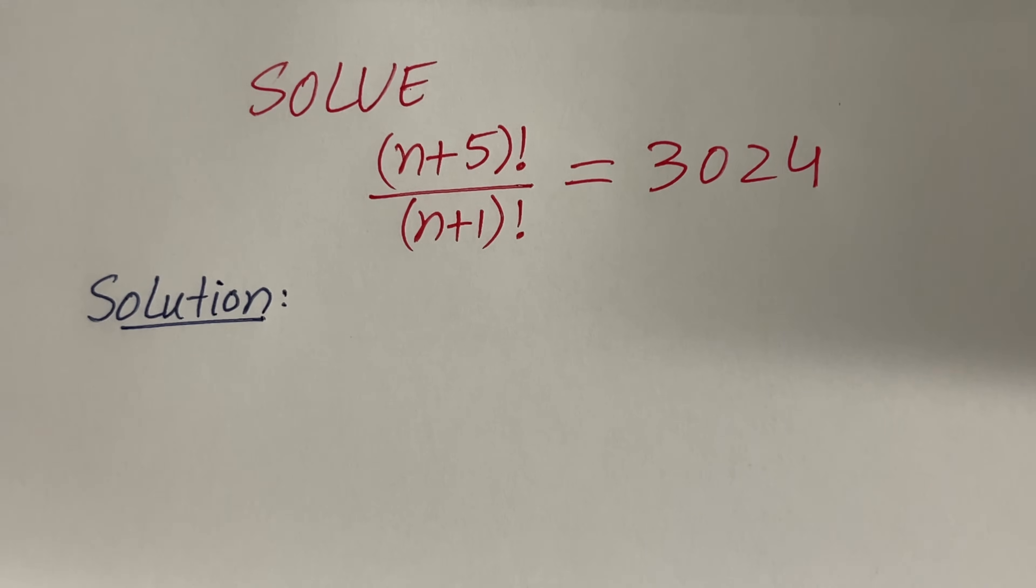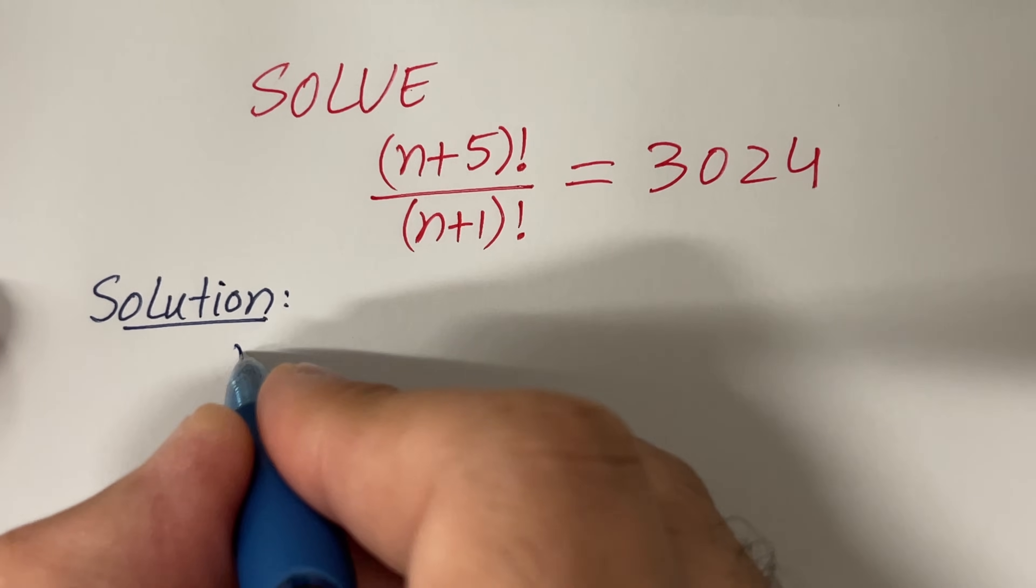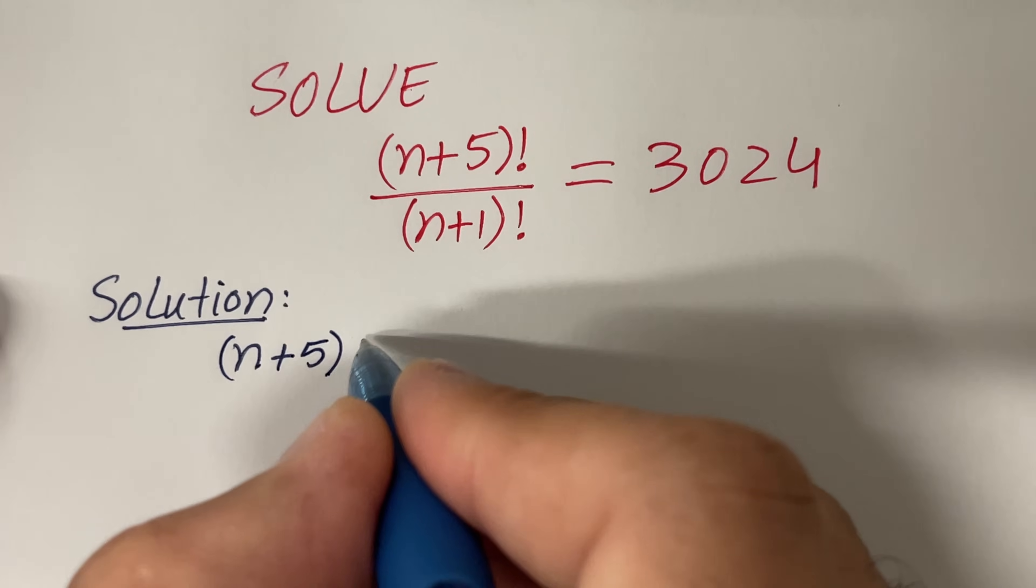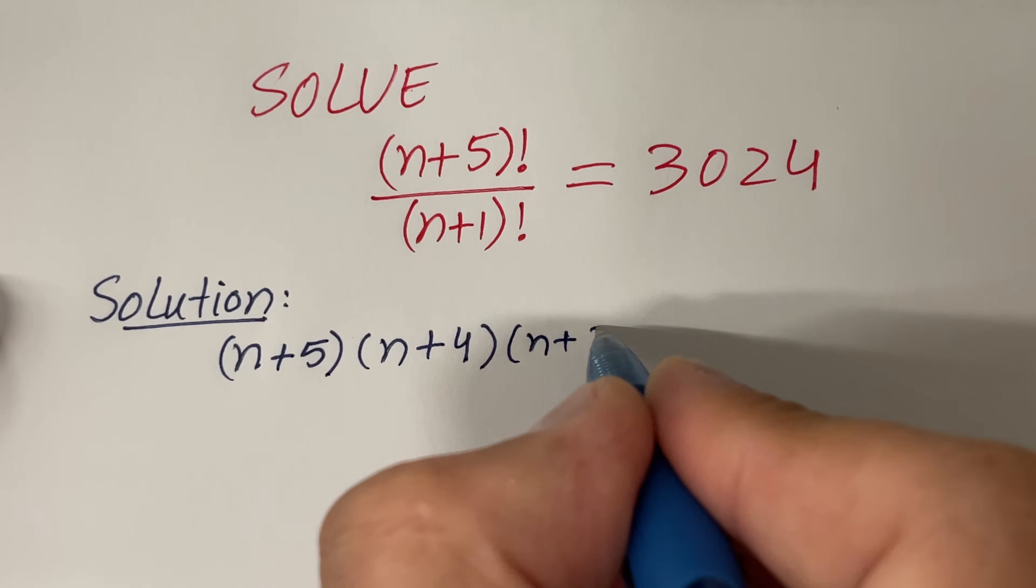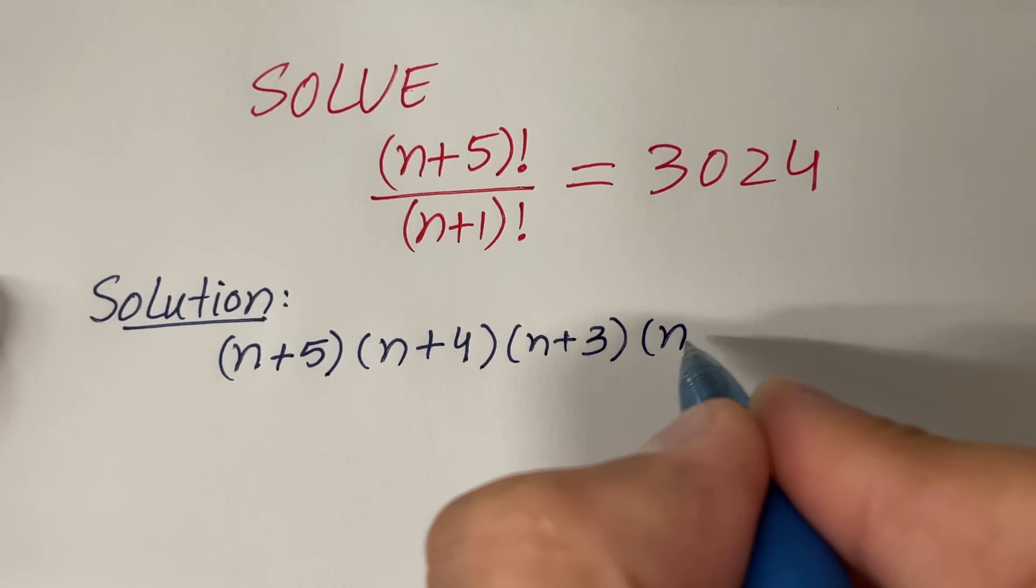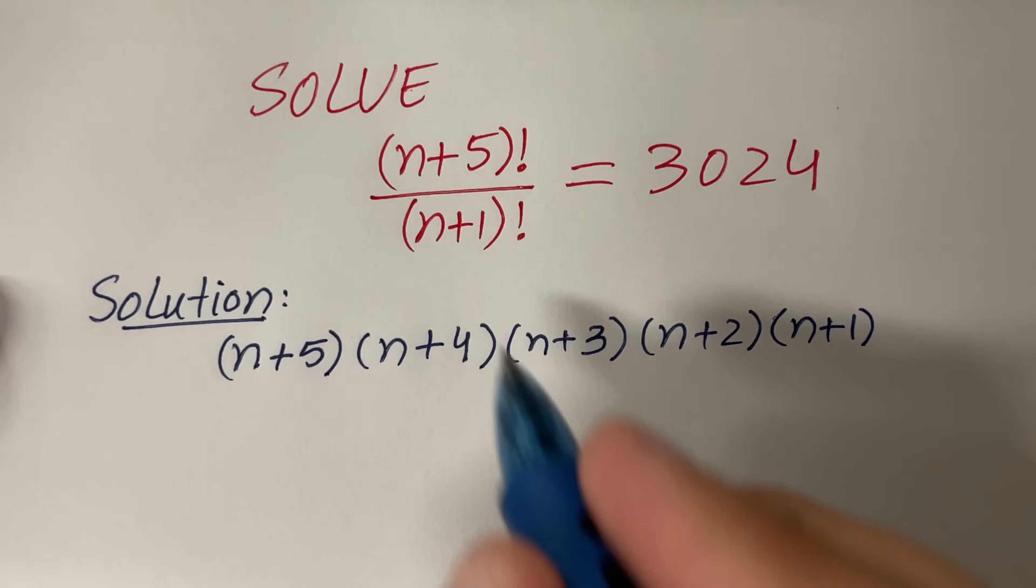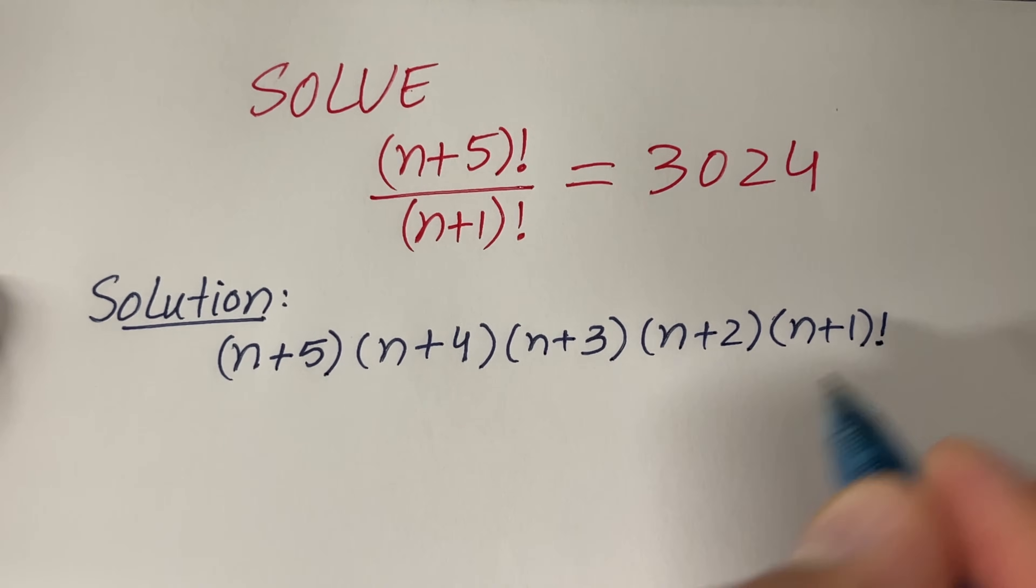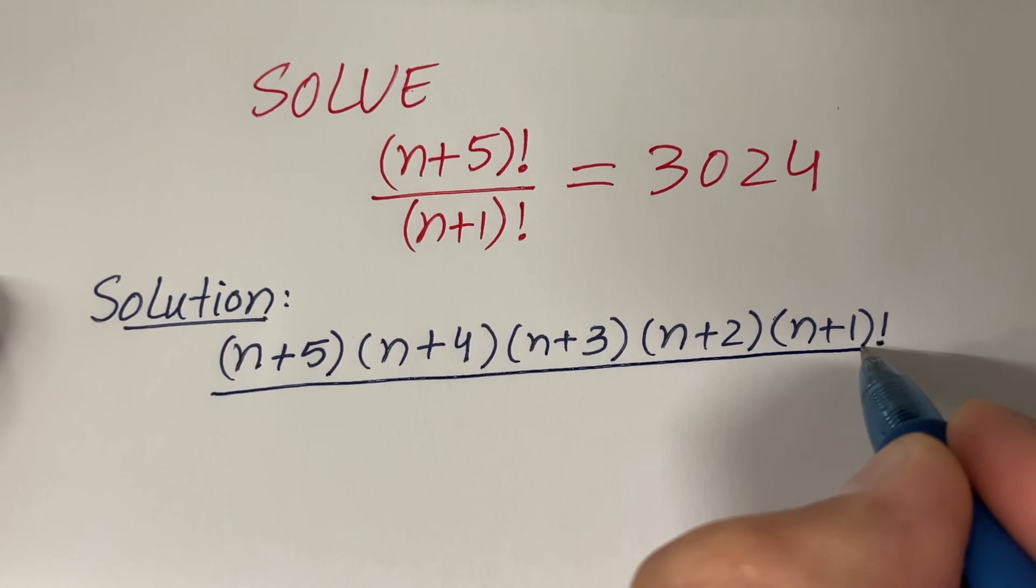The left-hand side of the given equation is (n+5)!, which can be written as (n+5)(n+4)(n+3)(n+2)(n+1). I will stop here at (n+1)! because (n+1)! is also in the denominator.